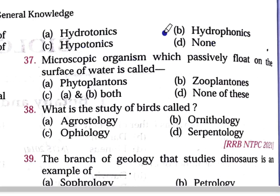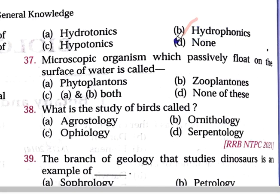Growing plants without soil — meaning in water containing nutrients — the correct option is hydroponics. Hydroponics is the art of gardening or culturing plants without soil. Hydro means water, so water plus nutrients are used, and we grow plants without soil. So hydroponics is the technique of culturing plants without soil.